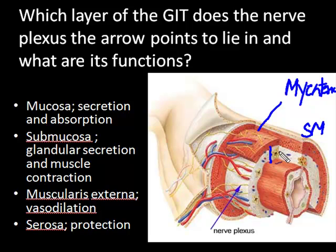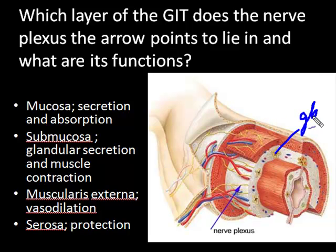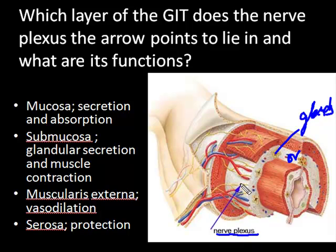In the submucosa you can see glands with ducts that open into the lumen, as well as blood vessels shown here as cut sections. And this nerve plexus, which is what the arrow is pointing to, lies in the submucosa. This nerve plexus is known as Meissner's nerve plexus. The way you'll remember it is 'S' — Meissner's for submucosa.